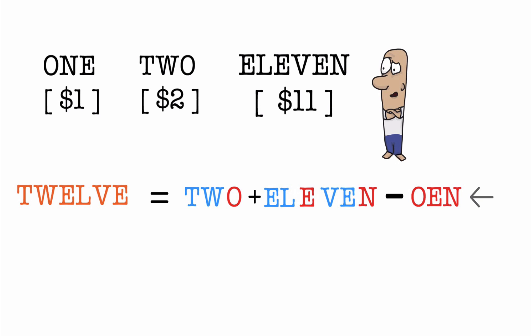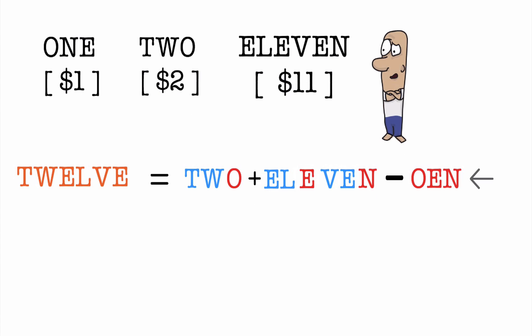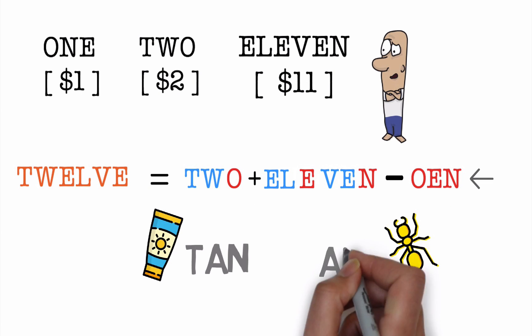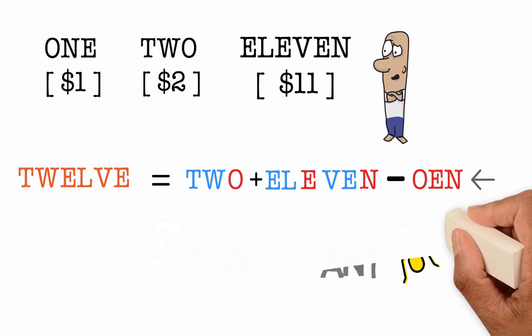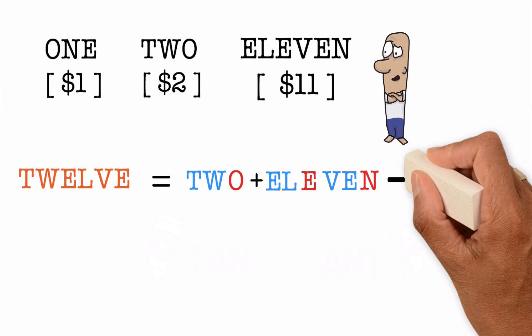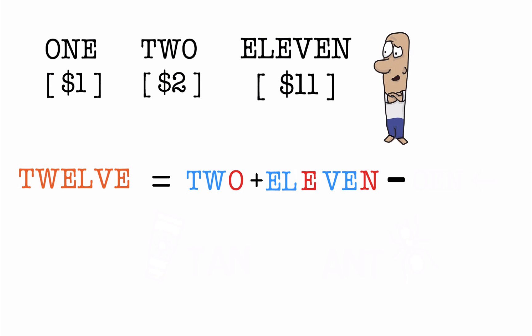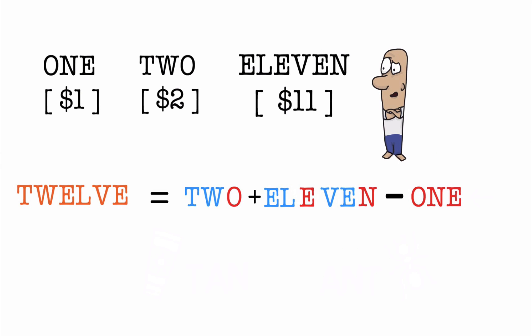But wait a minute. O, E, N is an anagram for ONE. An anagram is a word that can be formed by rearranging letters of another word. So for example, the letters of the word TAN can be rearranged to form the word ANT. Okay, coming back to our problem. So we can say TWELVE is equal to TWO plus ELEVEN minus ONE.